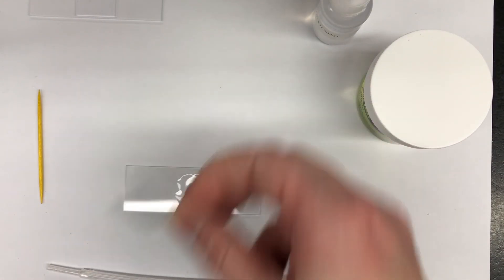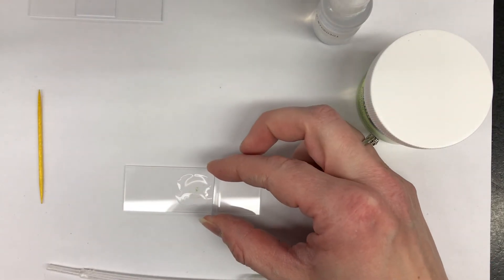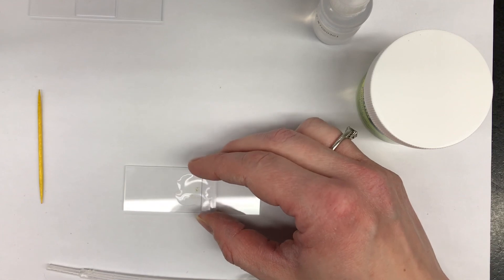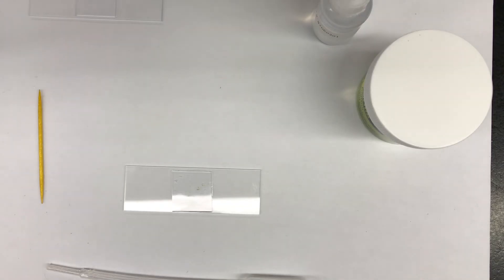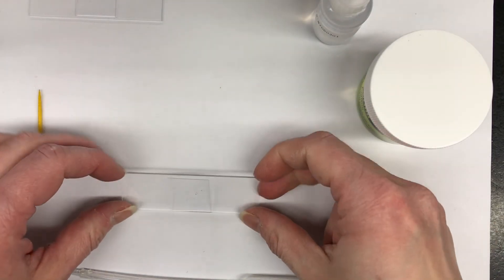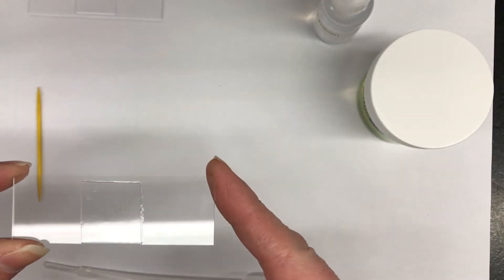You're going to pick up your cover slip, rest it on the slide, and then slowly lower it down onto your sample. And there you have it, a wet mount slide for euglena.